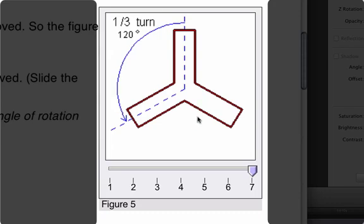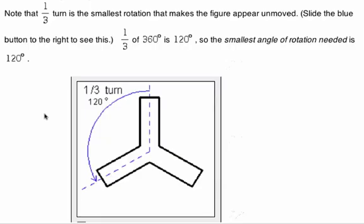So therefore, it does have rotational symmetry. So for a figure that has rotational symmetry, we've got to make note of the smallest angle at which it appears unmoved.